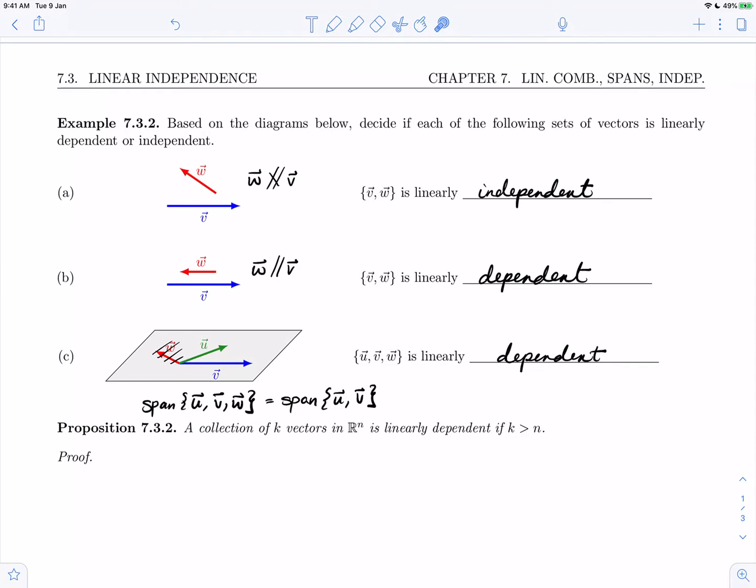Let's go ahead and look at proposition 7.3.2. A collection of k vectors in R^n is linearly dependent if k is greater than n. Let's go and prove this.